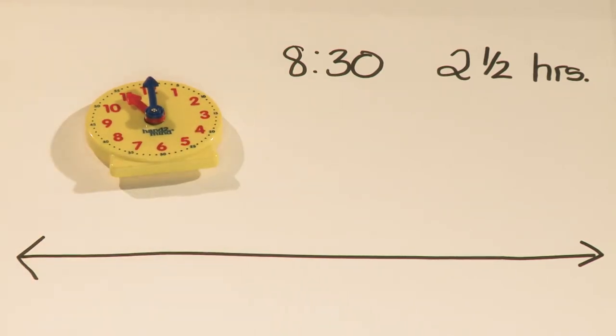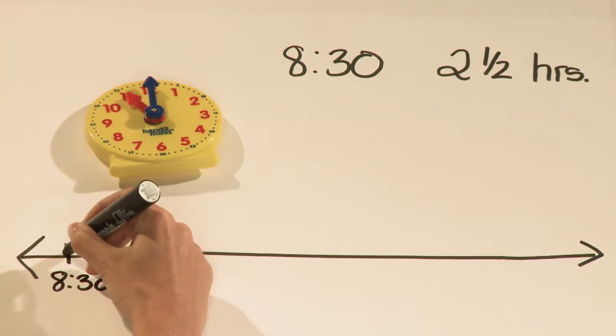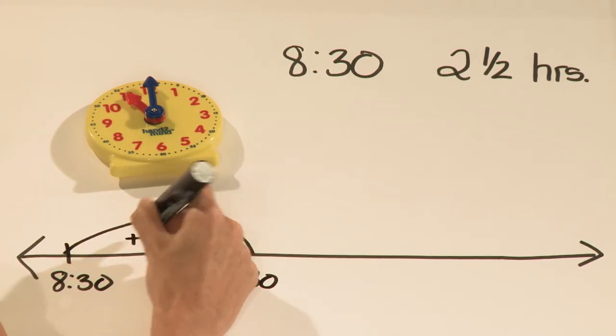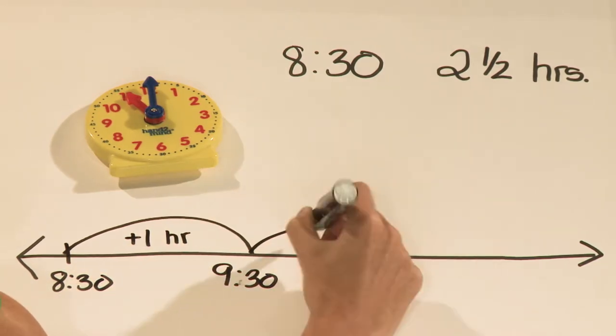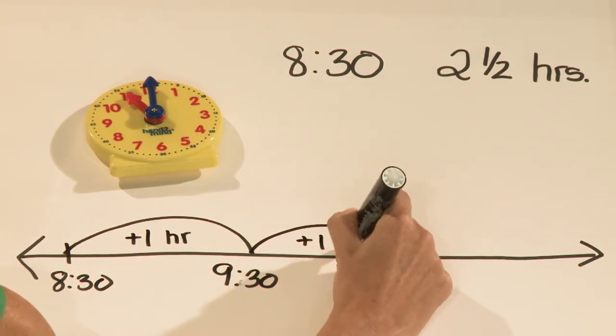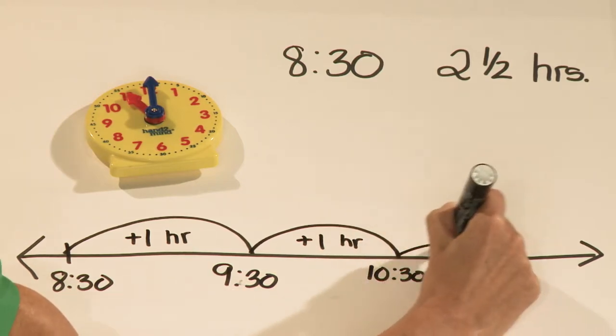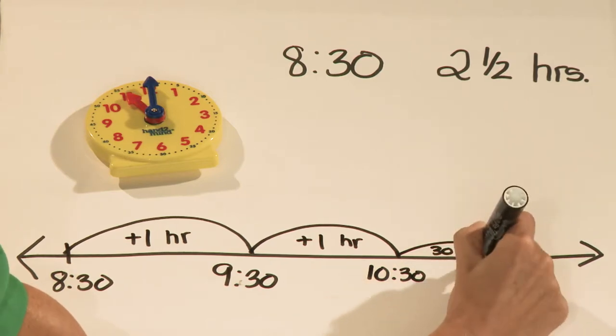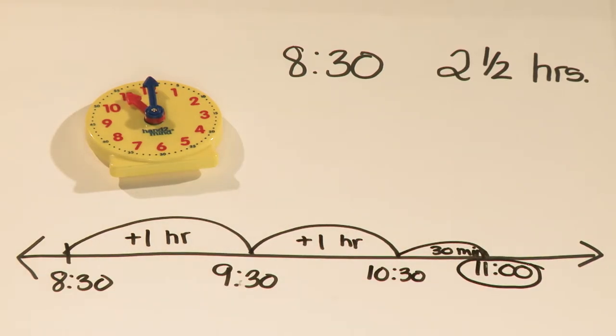We can also use an open number line to show this. If Mike started reading at 8:30 PM, I can do a jump of an hour to land at 9:30 PM, another hour to show 10:30 PM, and then jump 30 minutes to 11 o'clock. Both showing that Mike stopped reading at 11 o'clock.